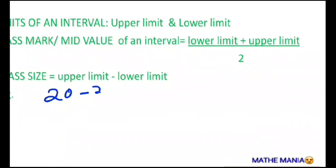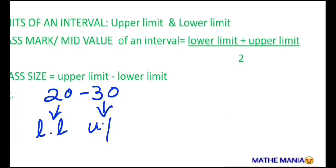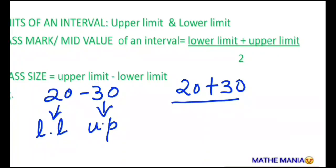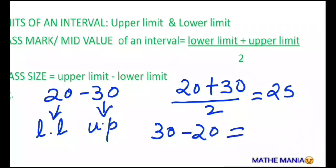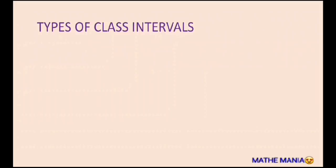Let's take the interval 20 to 30. The first number is called the lower limit and the second number is the upper limit. The class mark of this interval is obtained by adding the lower limit and upper limit and dividing by 2 — that gives us 50 upon 2, which is 25. So 25 is the class mark, and you can see it lies in the middle of the interval, which is why it's also called the mid value. The class size is obtained by subtracting the lower limit from the upper limit, which equals 10.